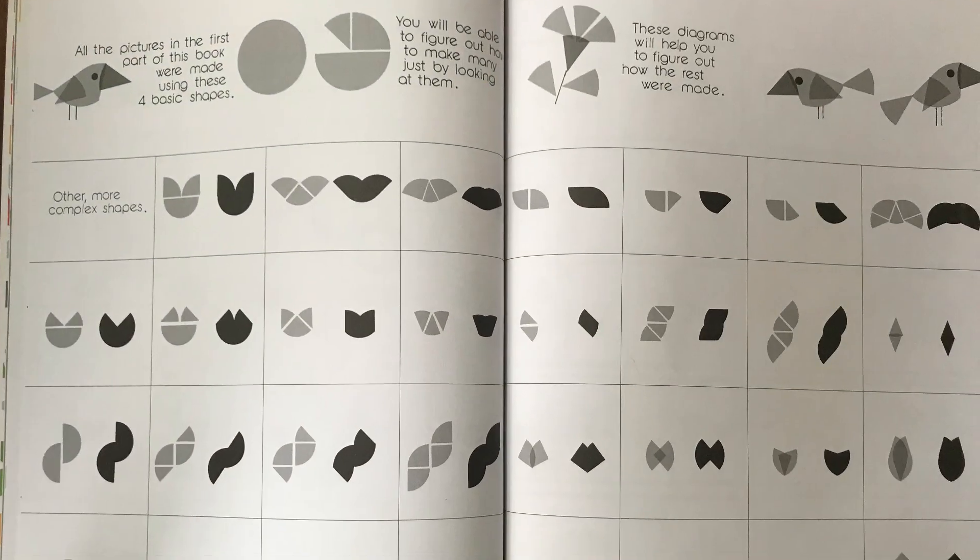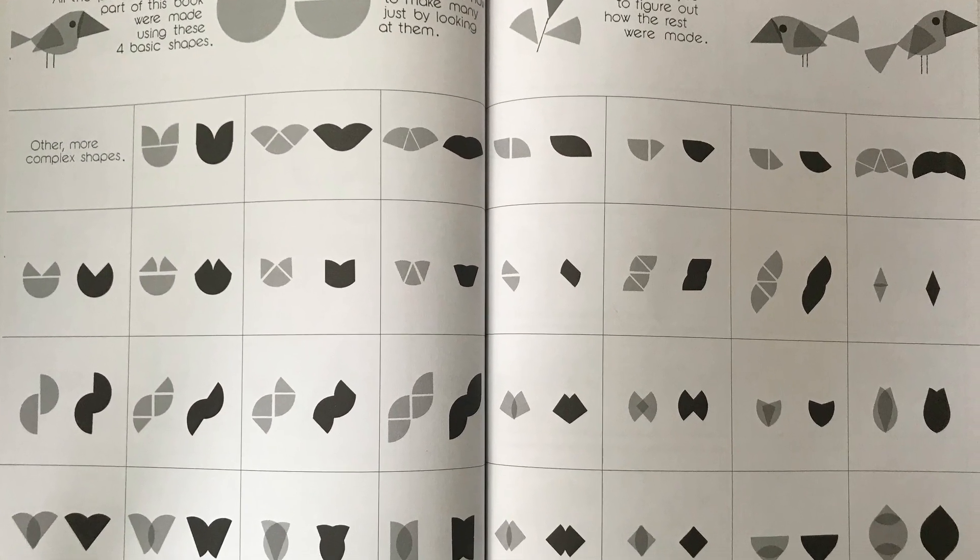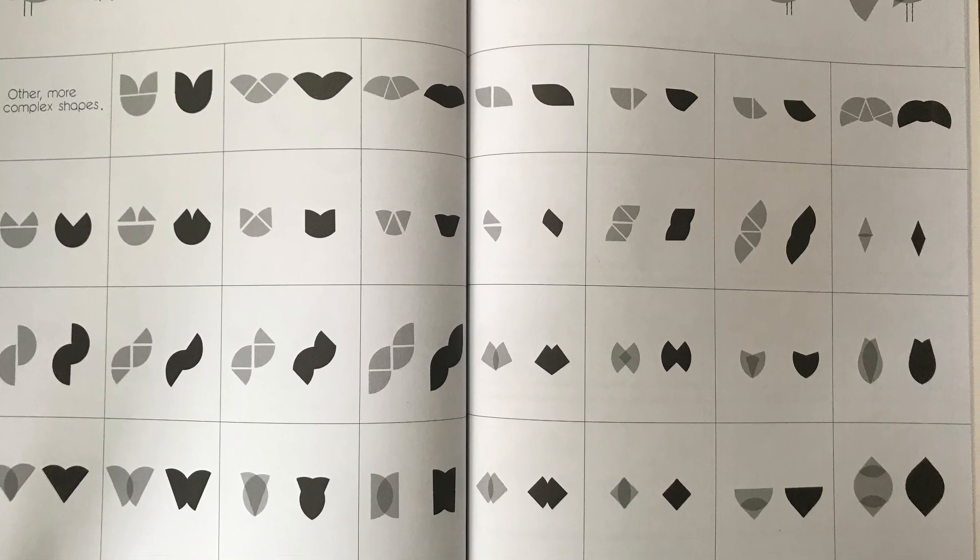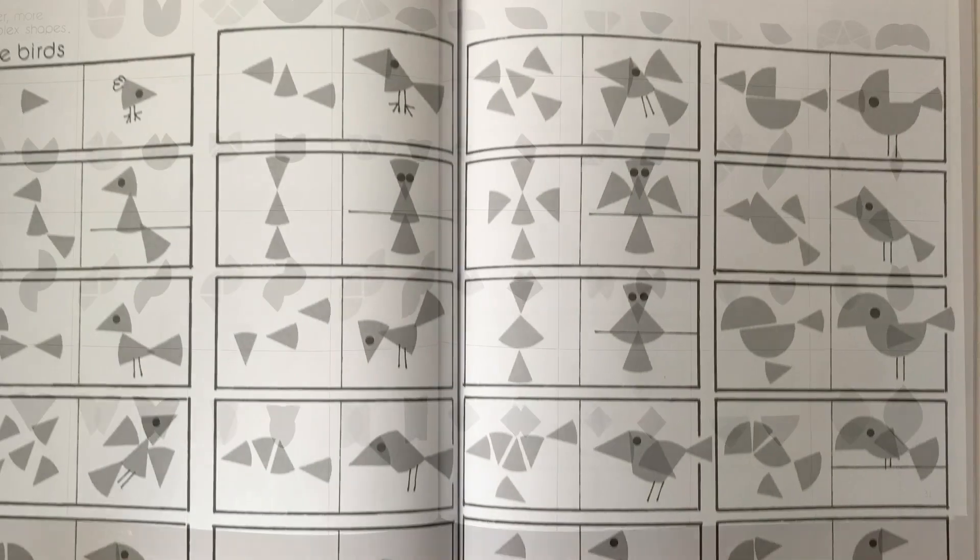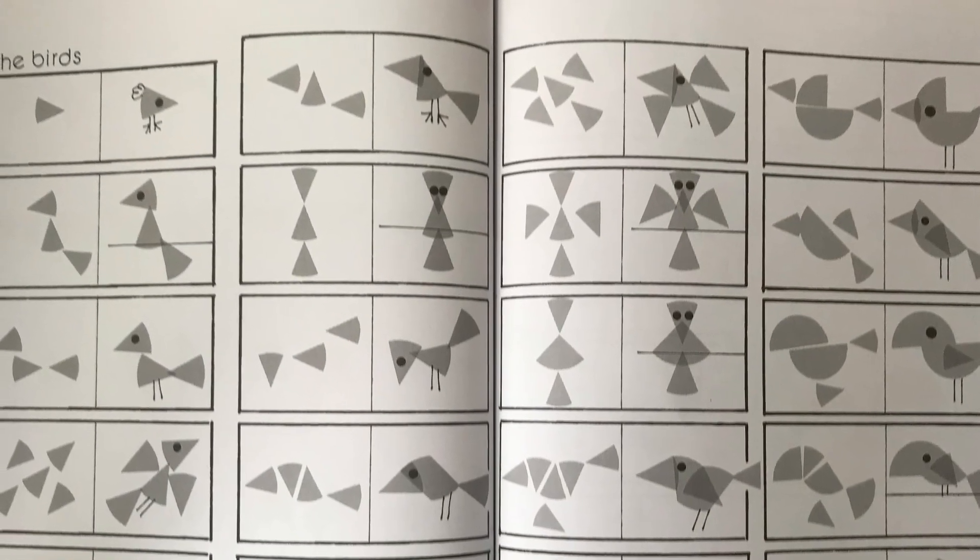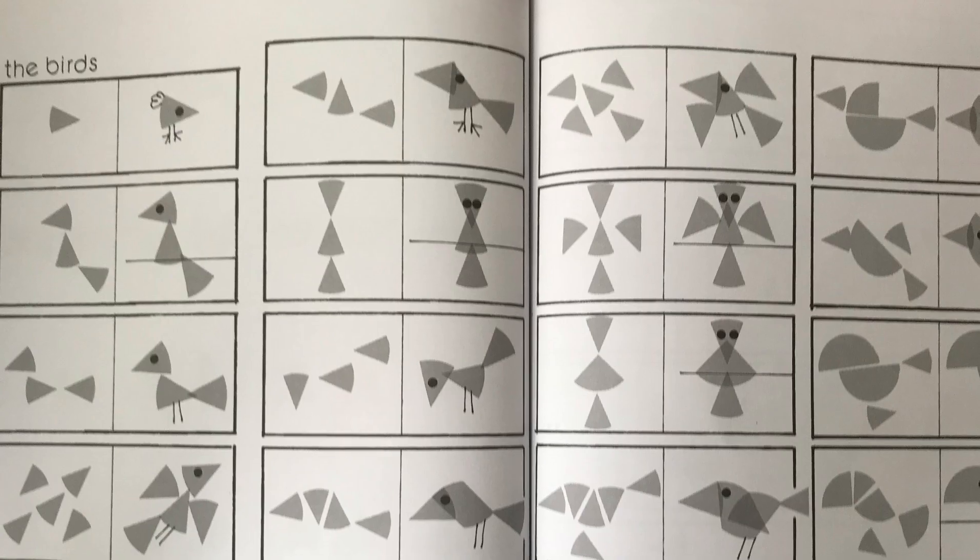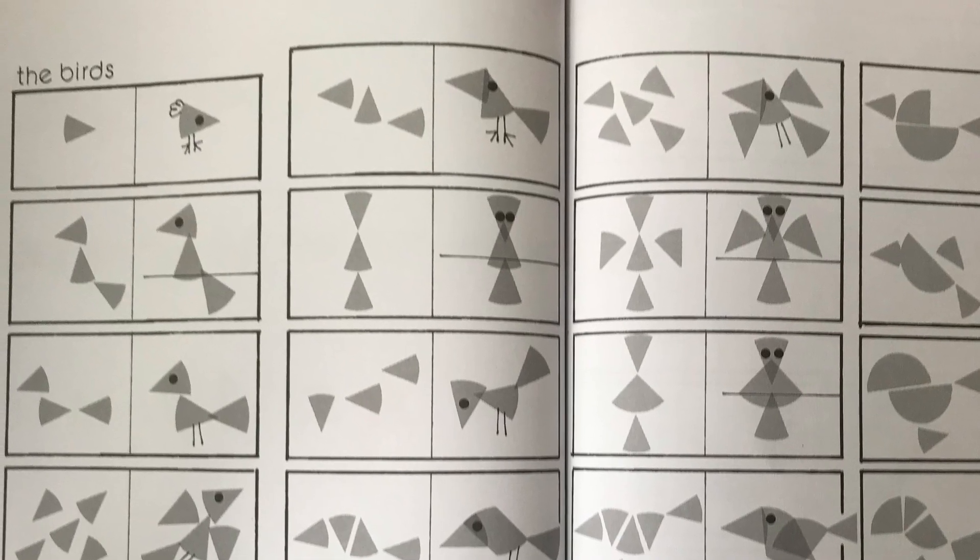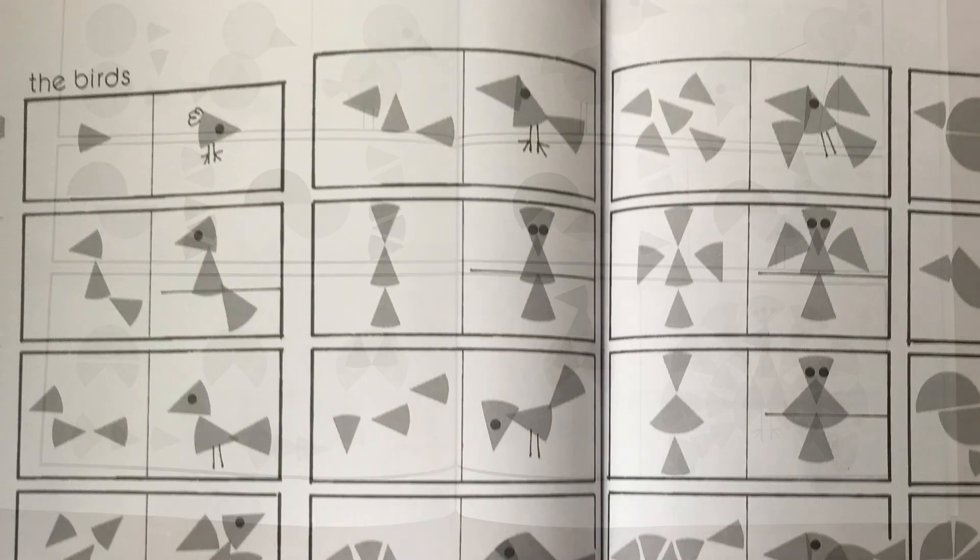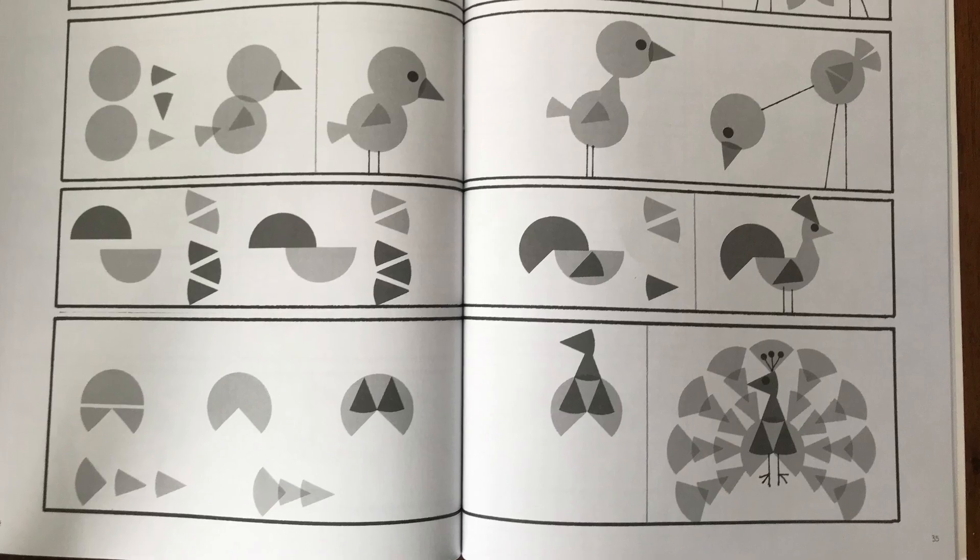All the pictures in the first part of the book were made using these four basic shapes. You'll be able to figure out how to make many just by looking at them. These diagrams will help you figure out how the rest were made. You can pause the video whenever you see something you would like to try and make.